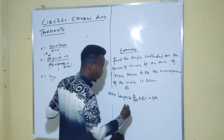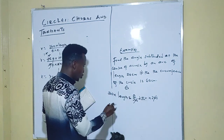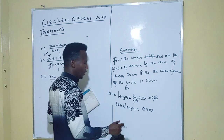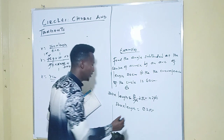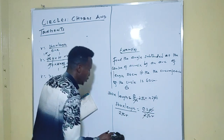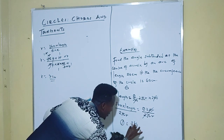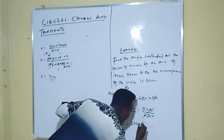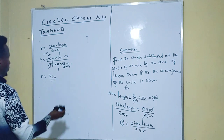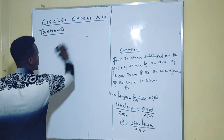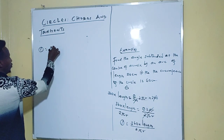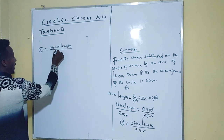Cancel the 360s on the right side since they are on the same side of the equal sign. You get 360 times length equals theta times 2πr, where 2πr is the circumference. Then to isolate theta, divide both sides by the circumference: theta equals 360 times length divided by the circumference.